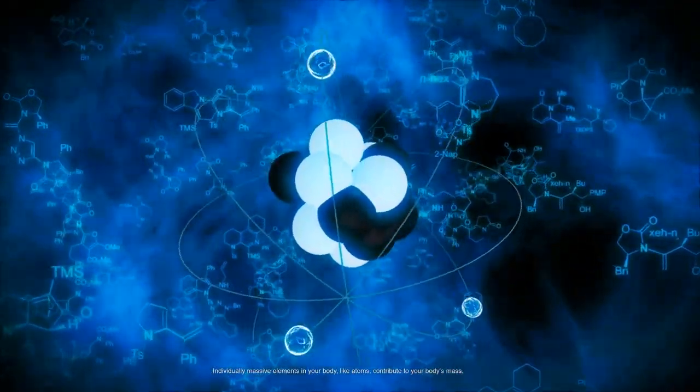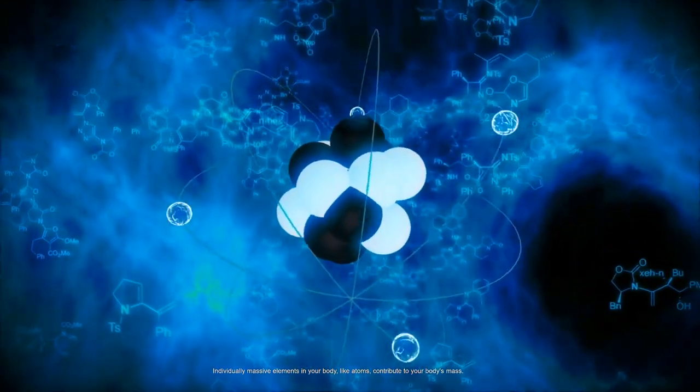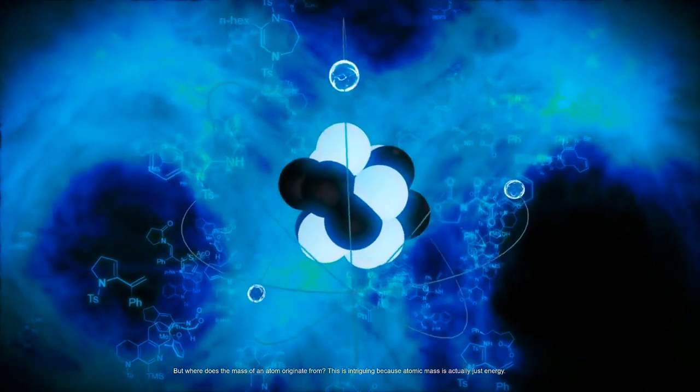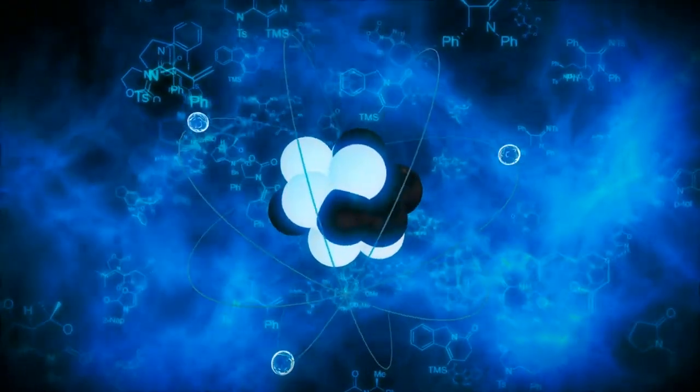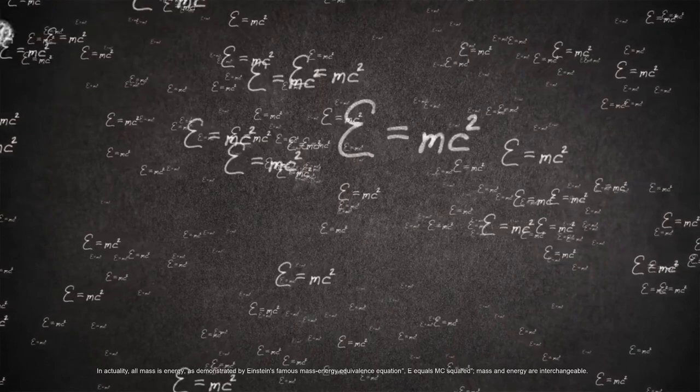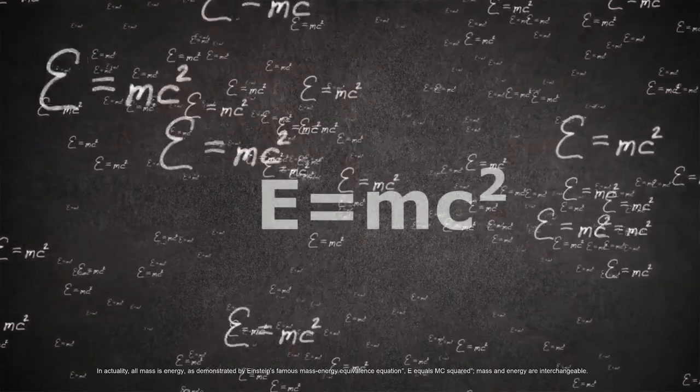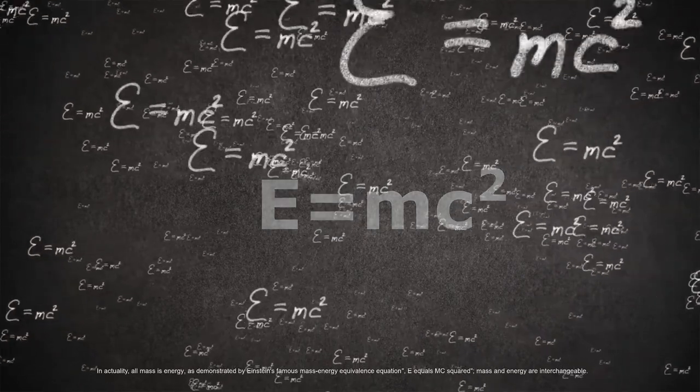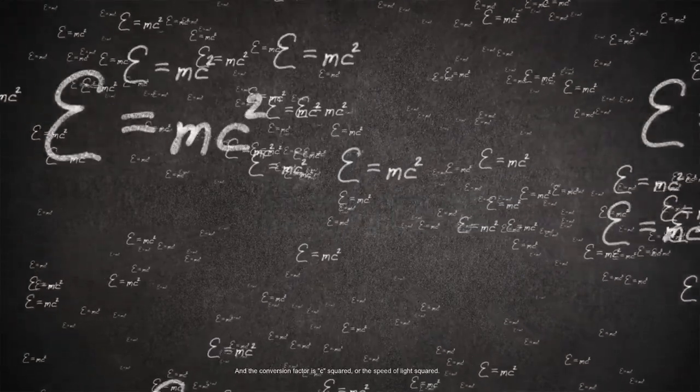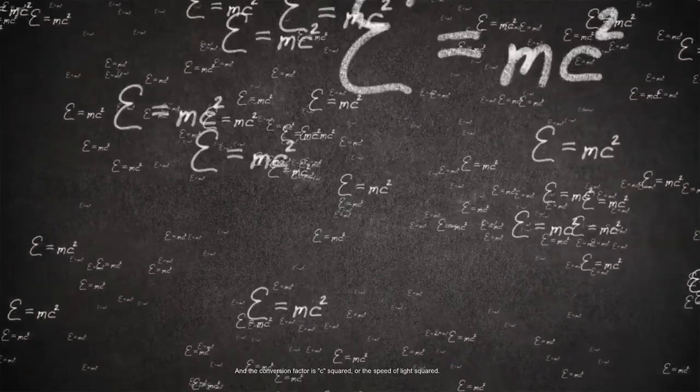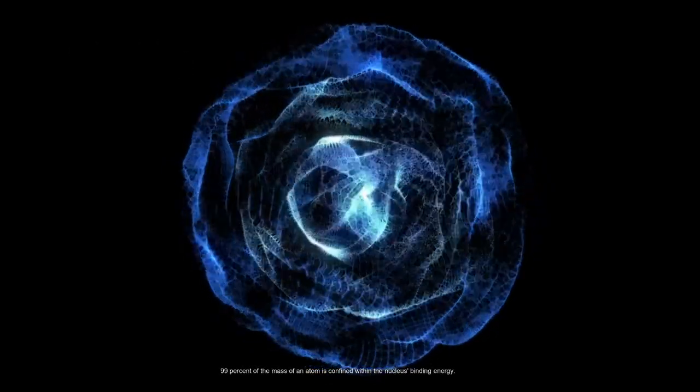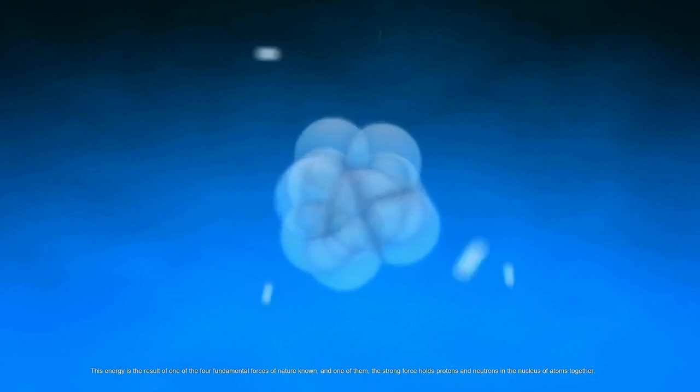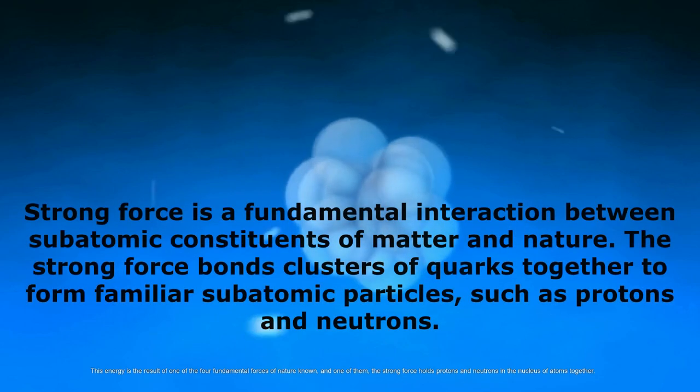Individual massive elements in your body like atoms contribute to your body's mass, but where does the mass of an atom originate from? This is intriguing because atomic mass is actually just energy. In actuality, all mass is energy, as demonstrated by Einstein's famous mass-energy equivalence equation E=mc². Mass and energy are interchangeable, and the conversion factor is c², or the speed of light squared. 99% of the mass of an atom is confined within the nucleus as binding energy. This energy is the result of the strong force, one of the four fundamental forces of nature, which holds protons and neutrons in the nucleus of atoms together.